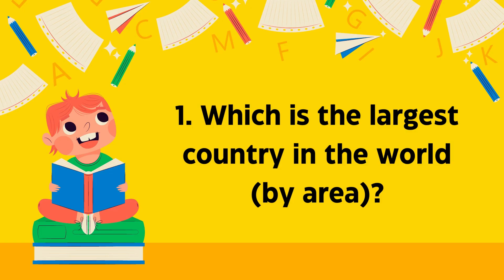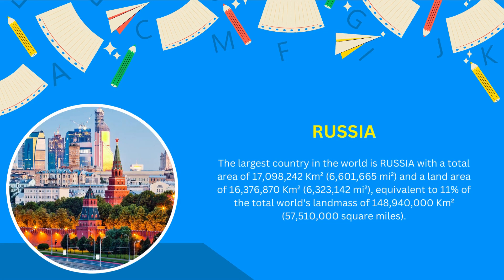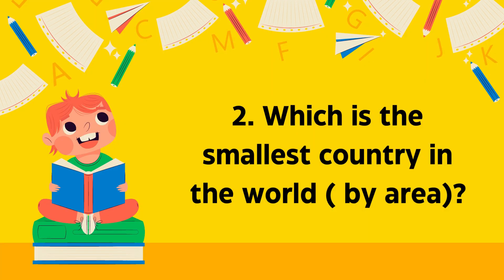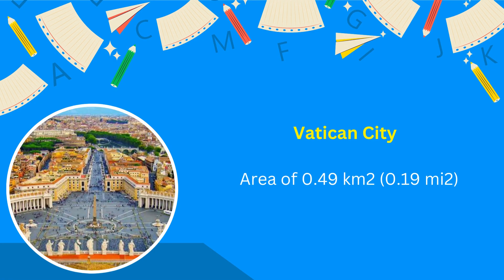Which is the largest country in the world by area? Russia. Which is the smallest country in the world by area? Vatican City.